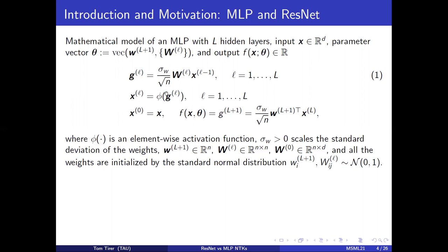Sigma w here is the hyperparameter that scales the standard deviation of the weights, which are initialized using standard Gaussian random variables.